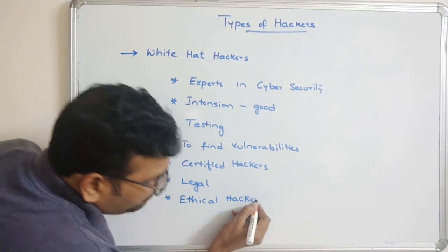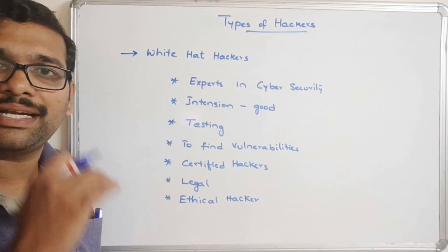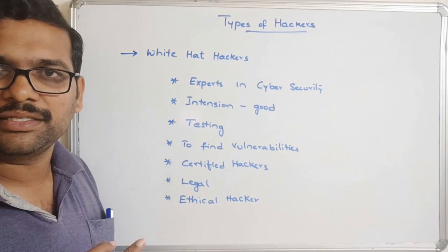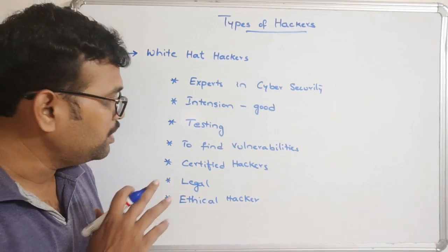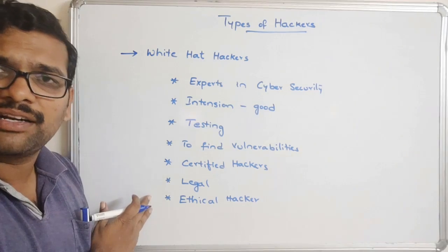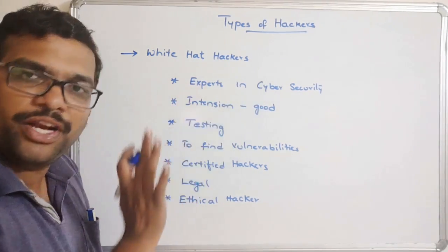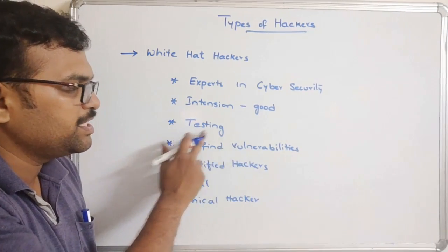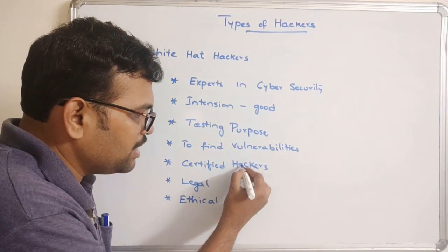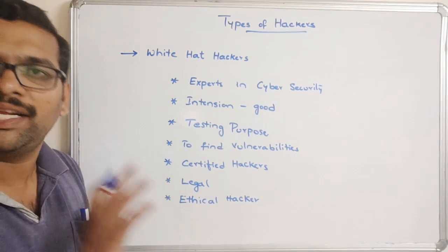A hacker is completely different from an ethical hacker. Gaining access to a target system with the permission of the organizational head in order to find vulnerabilities is called a white hat hacker. So expert in cyber security, good intention, testing purpose to find vulnerabilities, certified hackers, legal — these are also known as ethical hackers.